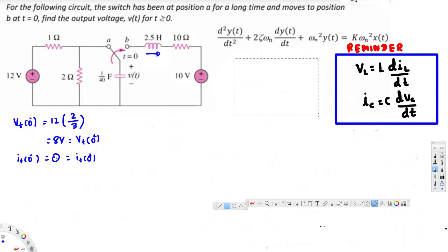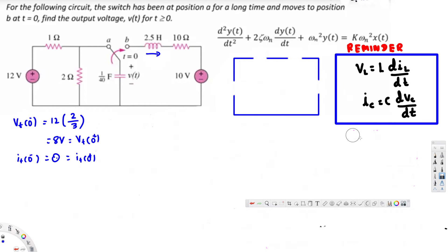Let's draw the new circuit. In the new circuit we are going to have the inductor, the resistor, the voltage source, and the capacitor. The inductor is 2.5 Henrys, the resistor is 10 ohms, the voltage source is 10 volts, and the capacitor is 1/40 Farads. This is what we are interested in: V of t.